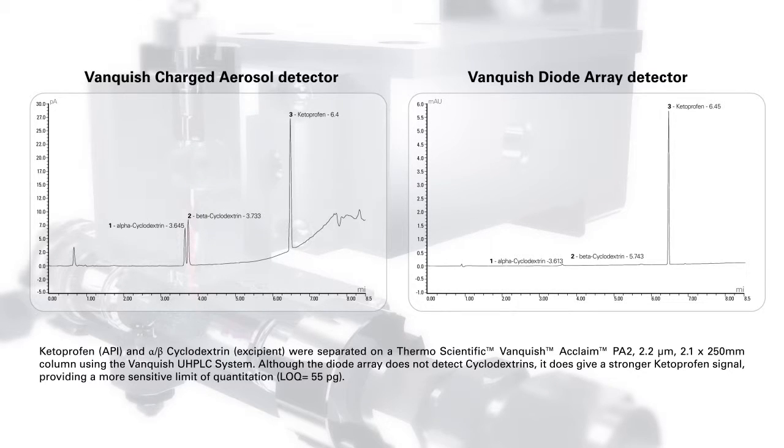When comparing these two chromatograms, the diode array detector gives a strong signal for ketoprofen but not for the two cyclodextrin moieties. The results from these orthogonal detector modules are however very complementary, leaving essentially no peak unseen.